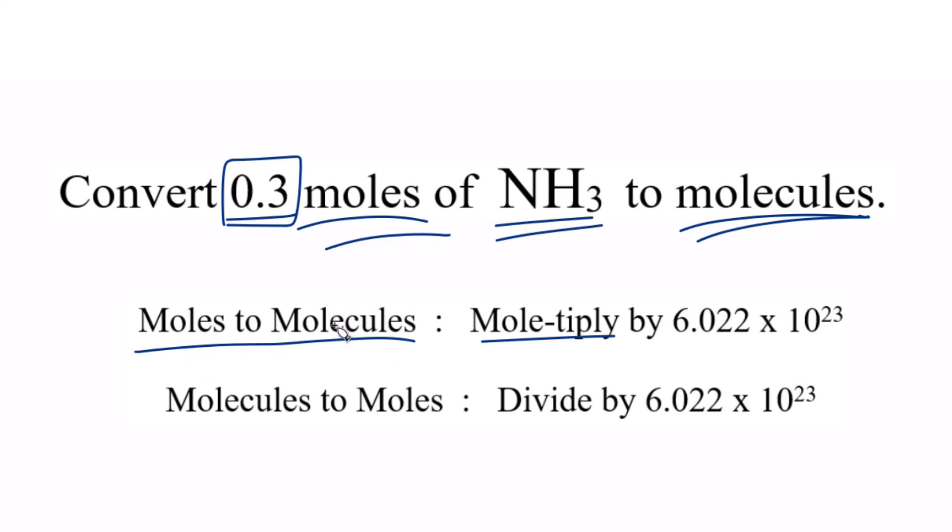So here we have moles to molecules, so we multiply by Avogadro's number. If we're going the other way, say molecules to moles, we just divide. So we're going to multiply 0.3 times Avogadro's number. Let's do that.